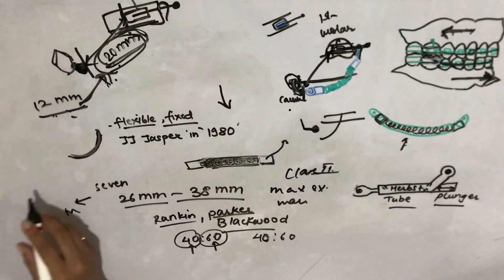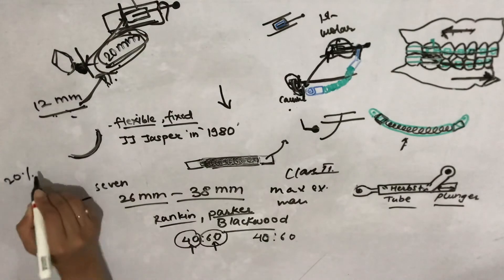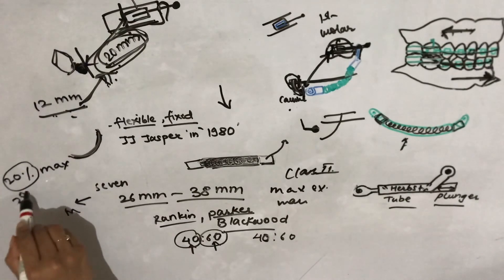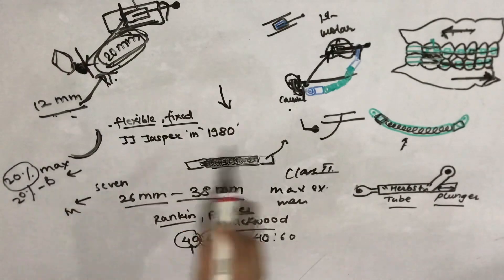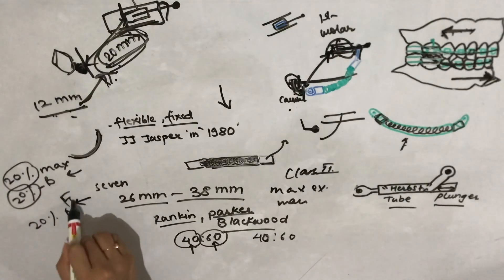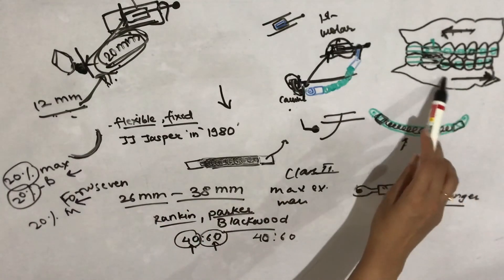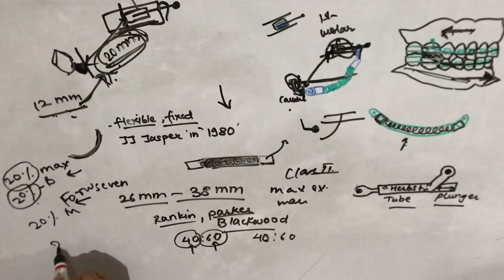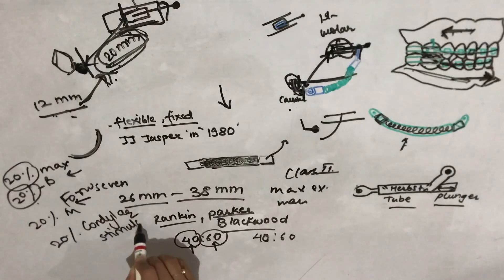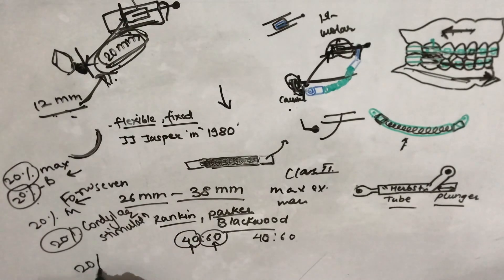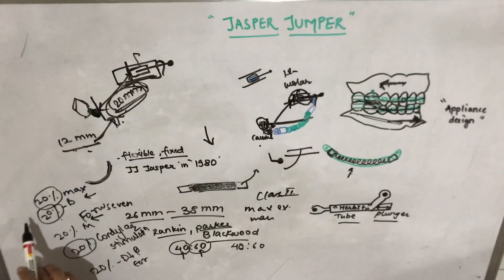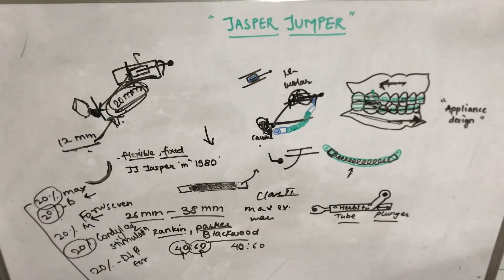Jasper states that Class 2 correction with this appliance is brought about by: 20% maxillary skeletal restraining, 20% backward dental alveolar movement of the maxilla, 20% forward dental alveolar movement of the mandible, 20% condylar stimulation (condyles moving forward), and 20% by downward and forward remodeling of the glenoid fossa.